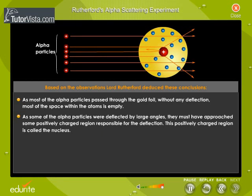As some of the alpha particles were deflected by large angles, they must have approached some positively charged region responsible for the deflection. This positively charged region is called the nucleus.